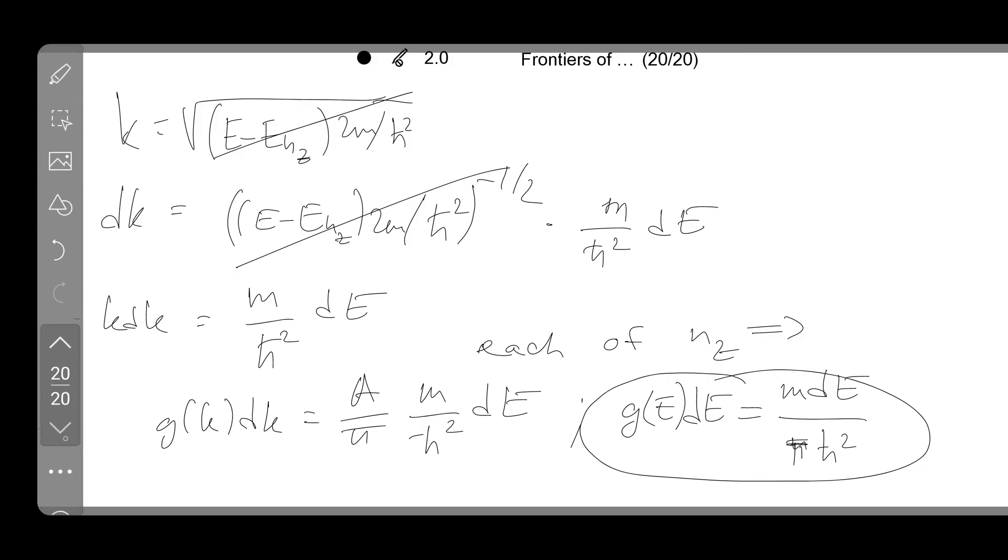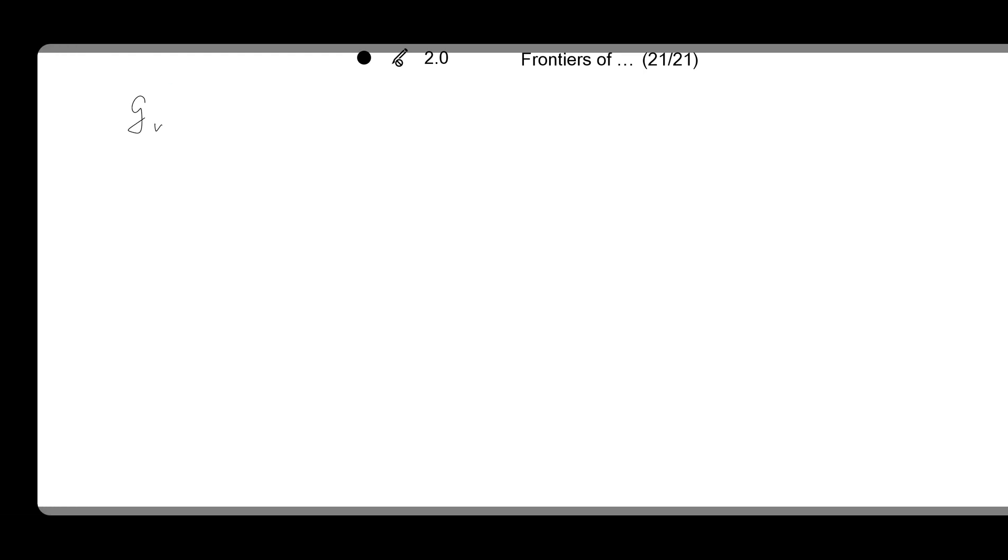And let me try to summarize it graphically as well. So now we have lots of these nz states and for each of the nz states I can write down g sub nz of E dE is m over h-bar squared pi. And then we can use a sort of a theta function to have these independent values of density of states. So the Heaviside step function (E minus Enz). That's the expression and then we can plot it.